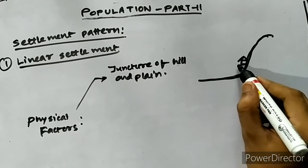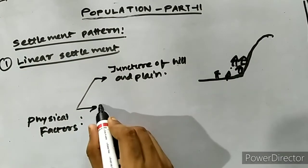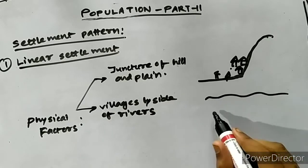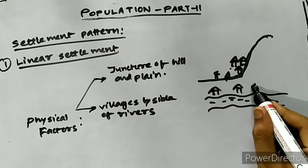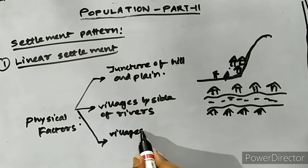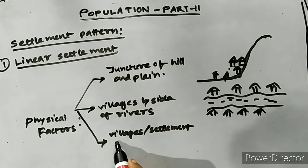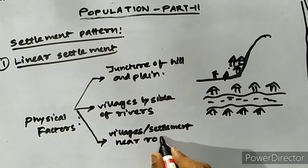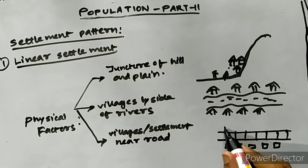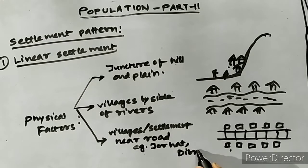The physical factors leading to linear settlement include the juncture of hill and plain, where residential houses are built at the immediate end of the hill slope — for example, in areas like Kanapara side of Lakhimpur in the north. Villages by the side of large rivers such as Majuli and Lakhimpur also show this pattern. The most important factor is a road or railway line. In less populated areas of Dibrugarh and Jorhat along the highway, people are settled in a linear pattern on both sides, which is also termed the shoestring pattern.